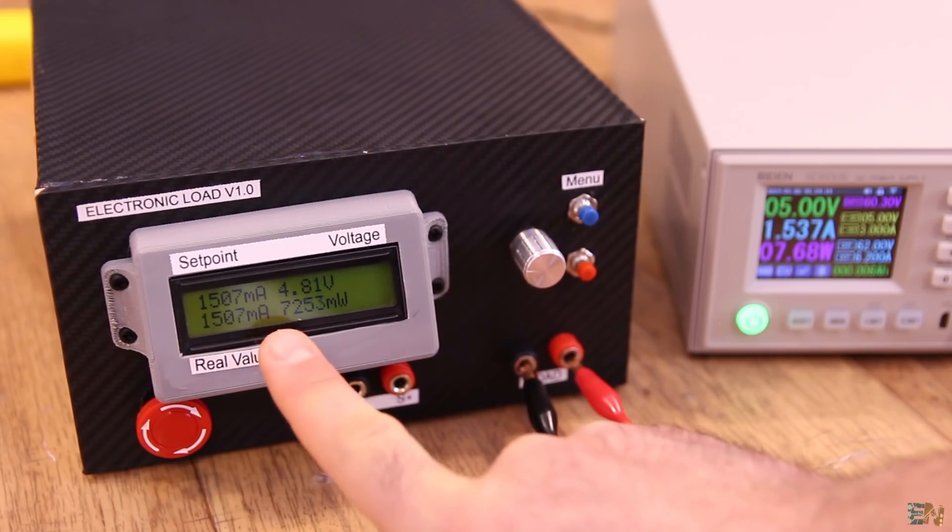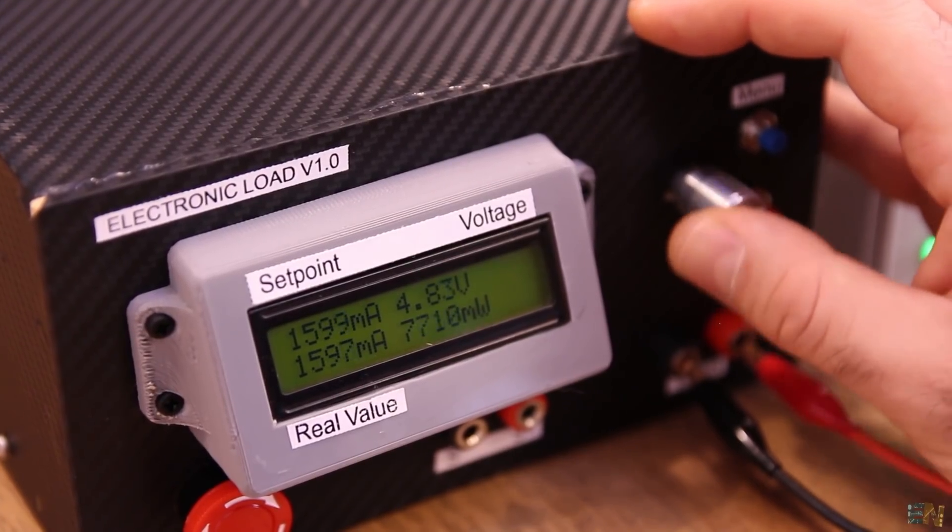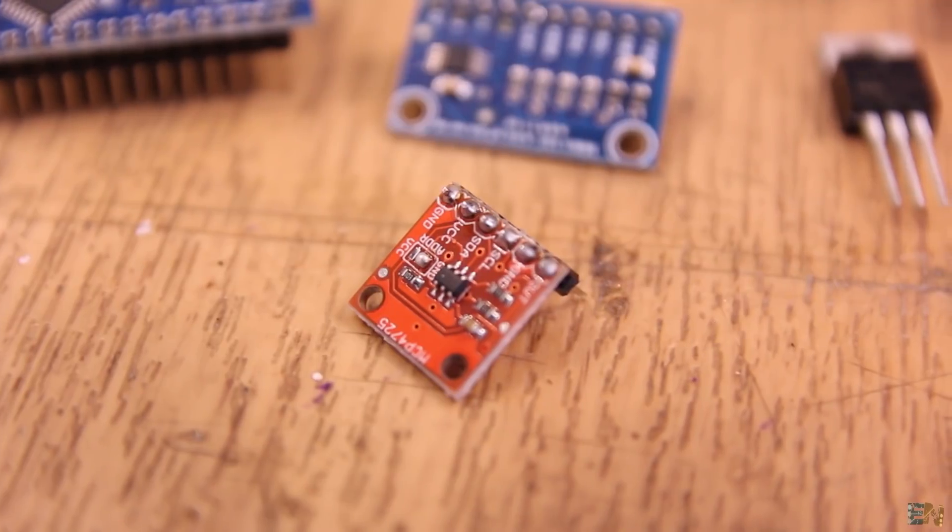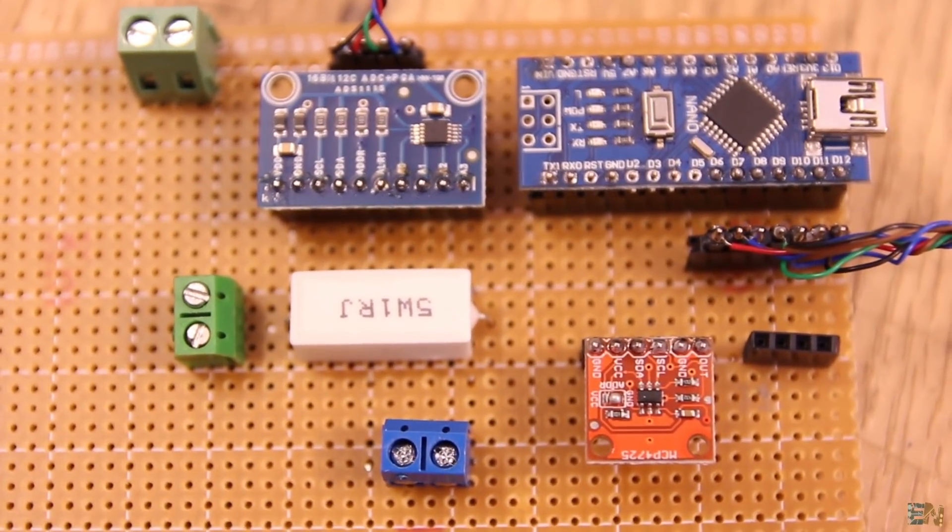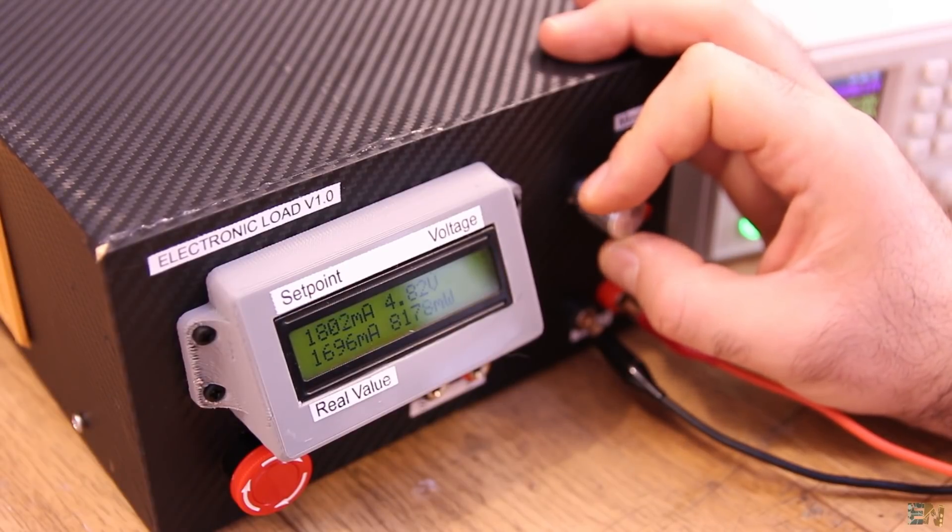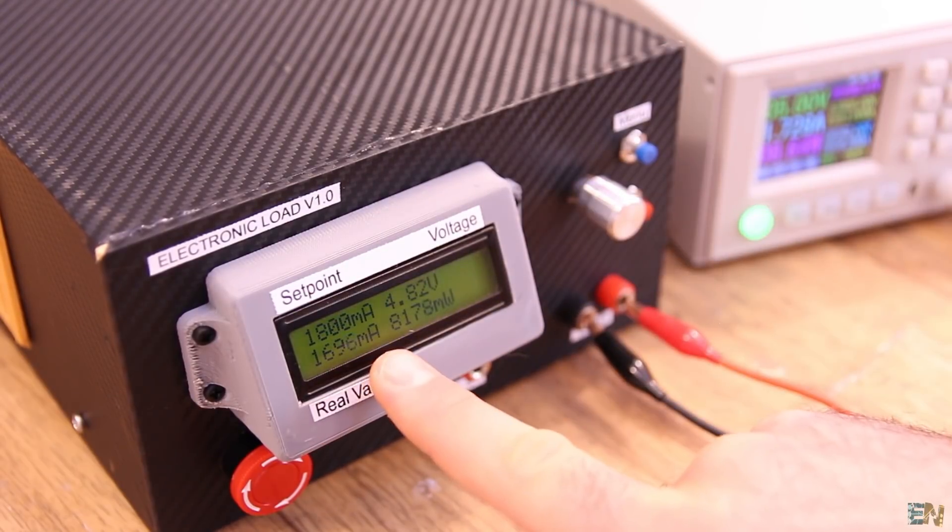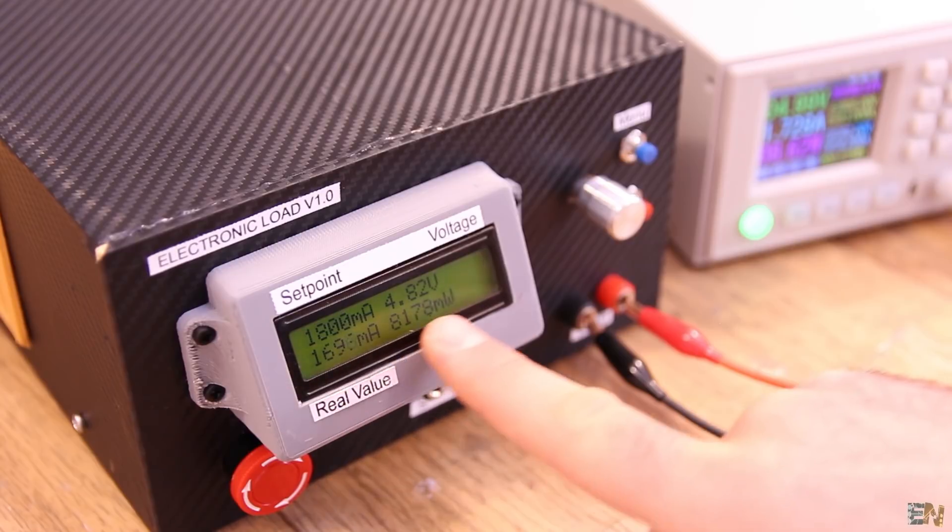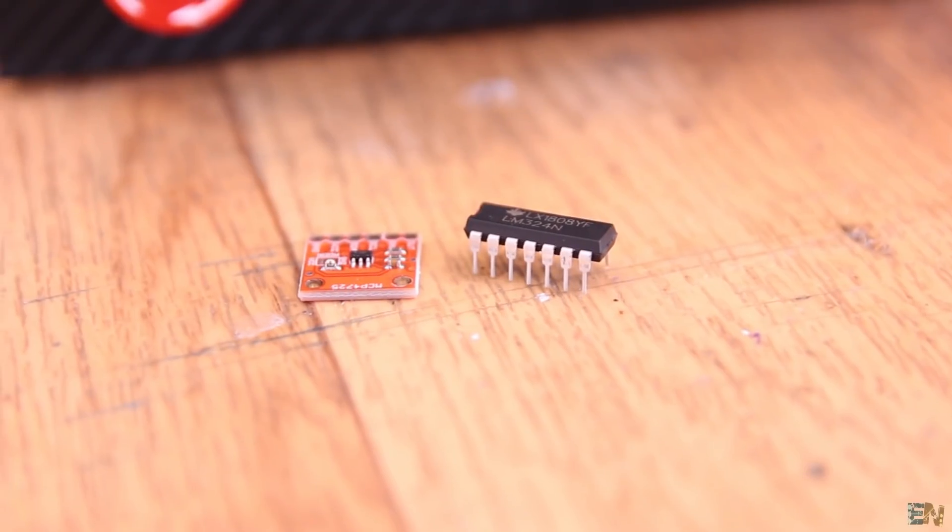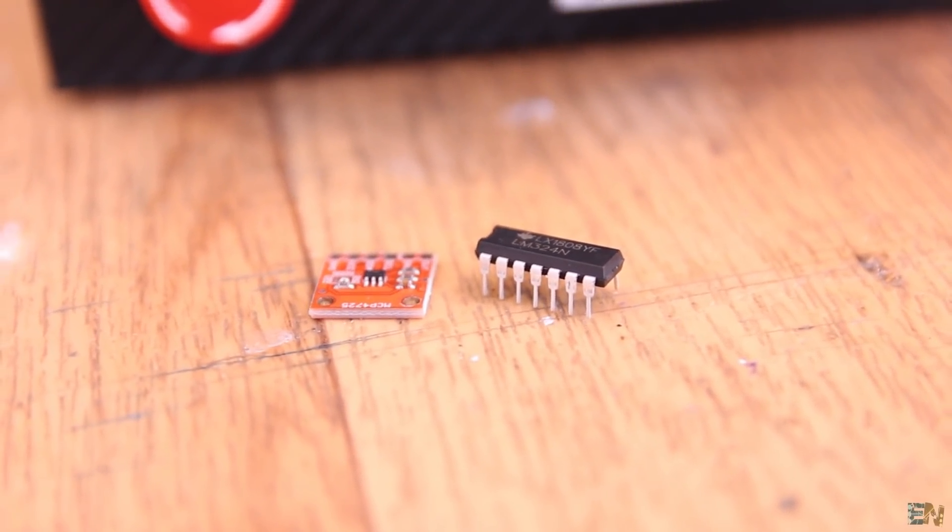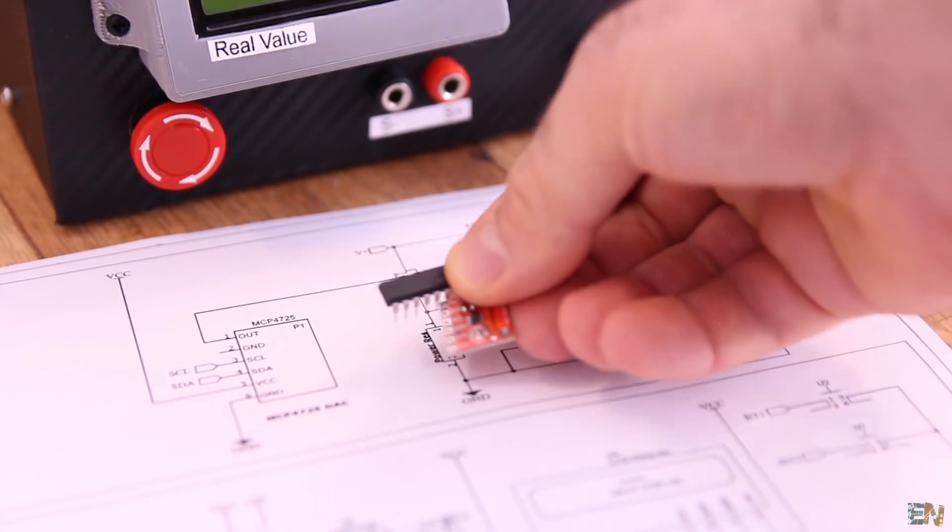This controller could get up to 1.6A, more or less. But that's because the DAC output could only go up to 5V so we can't fully turn on the MOSFET. As you can see, even if I set the current to 1.8A, it won't pass 1.7A. Don't worry, I will post a second schematic below that includes an operational amplifier to increase the DAC output up to around 10V so we could go to higher current values.